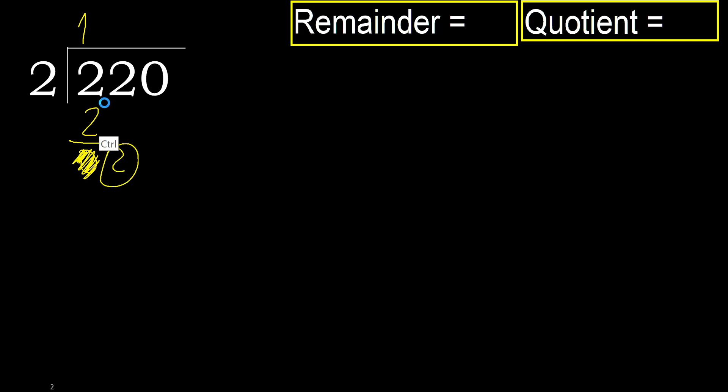2. 2 multiplied by 1 is 2, which is not greater. Ok, subtract.